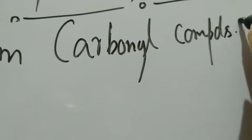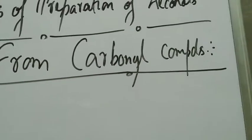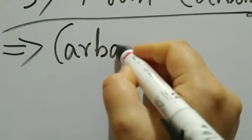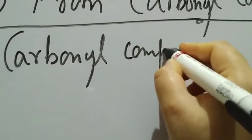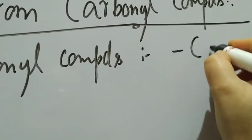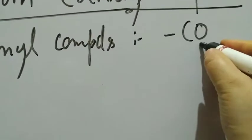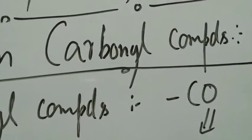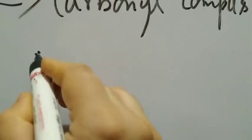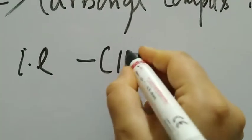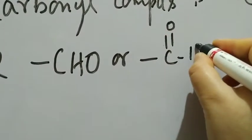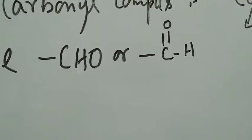The third method of preparation of alcohols is that they can be prepared from carbonyl compounds. The first thing we need to understand is: what is a carbonyl compound? The name carbonyl is given to the group C=O. So if the C=O group is directly present in any functional group, or is part of that group, that compound is a carbonyl compound.